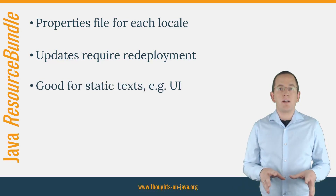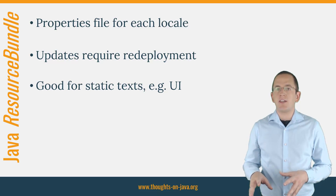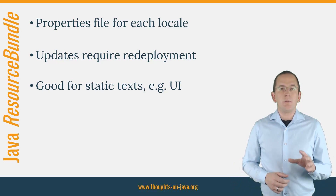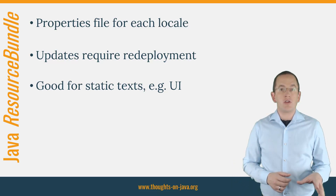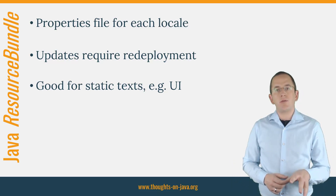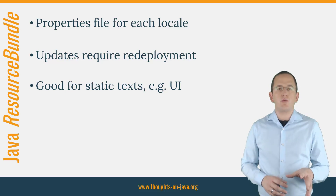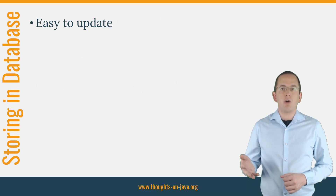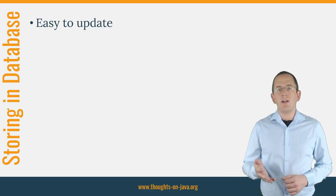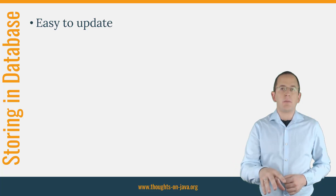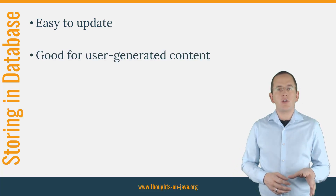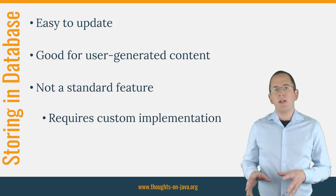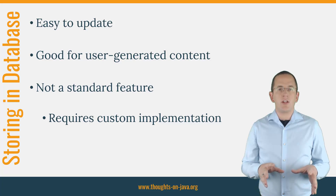That makes Java's resource bundle a good option for all static, predefined text like general messages or attribute names that you use in your UI. But if you want to translate user-generated content or any other string that gets often changed, you should prefer a different approach. You get more flexibility and updating a translated name or description is much easier if you persist the localized data in your database. Unfortunately, the implementation is also more complicated — there is no standard Java feature that you can easily use.